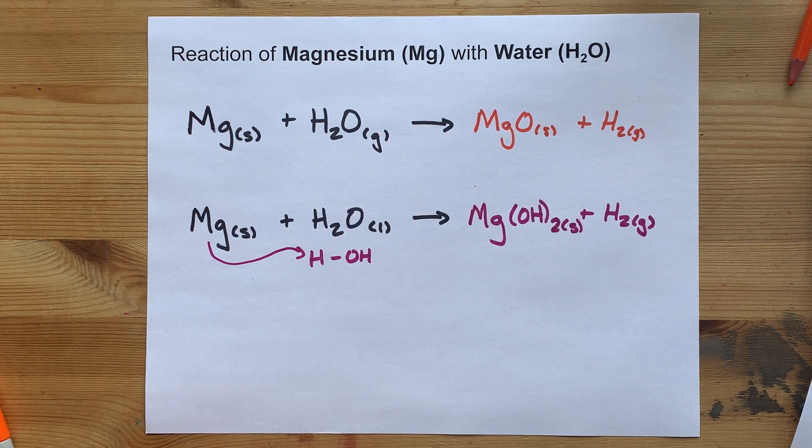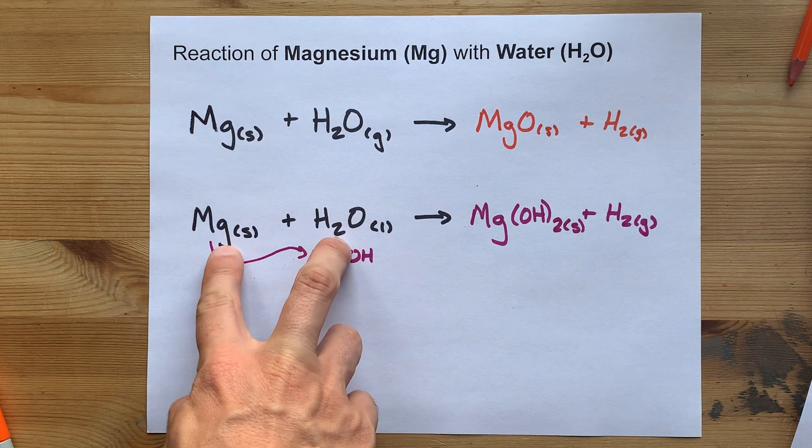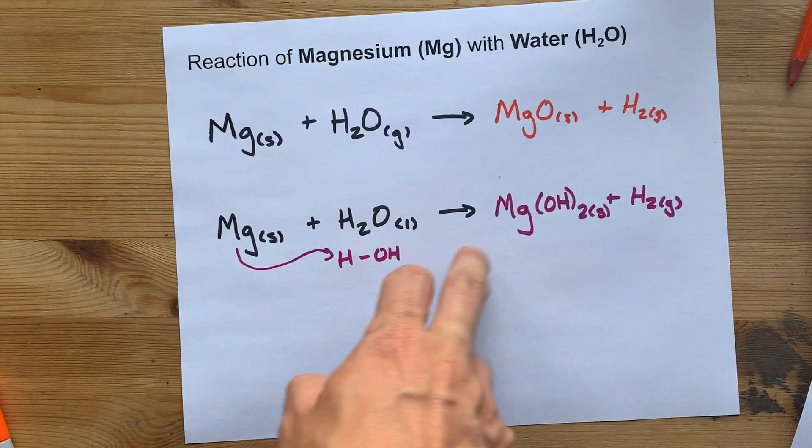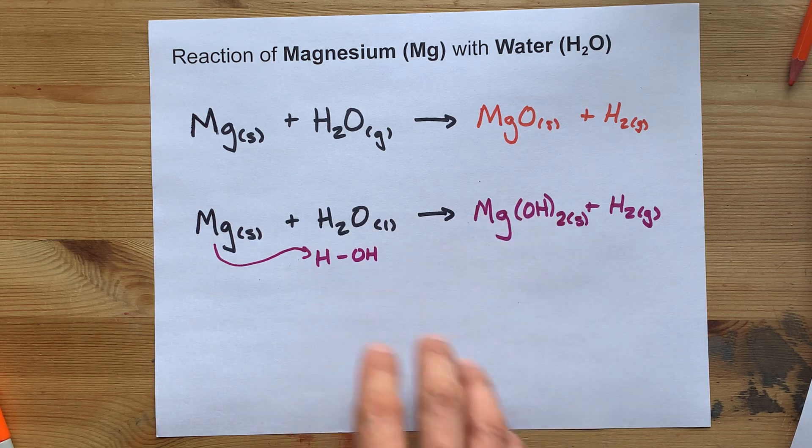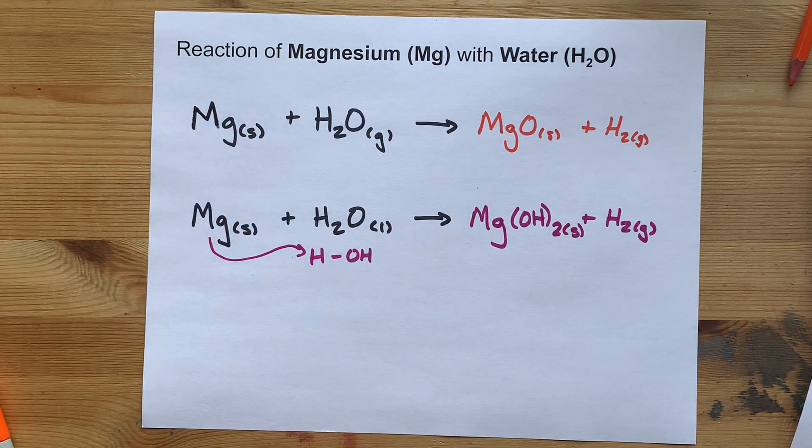The point is, you're probably being asked to know that it's a single displacement, and magnesium displaces 1H to give you magnesium hydroxide with a hydrogen byproduct.